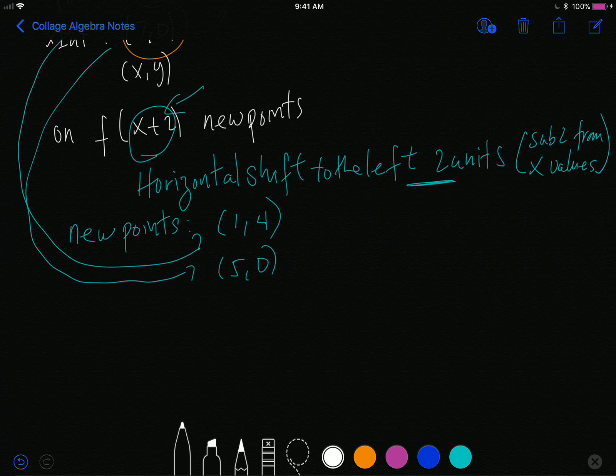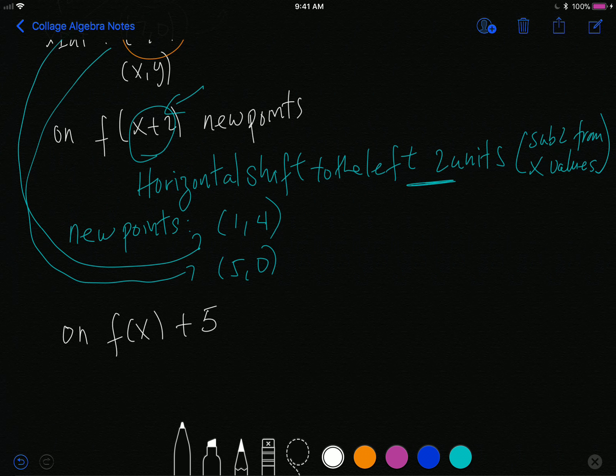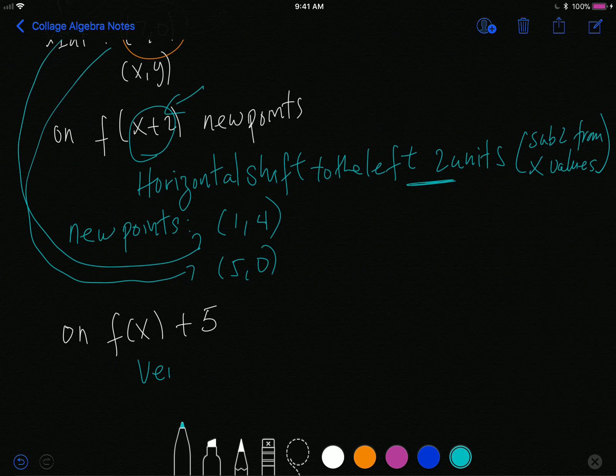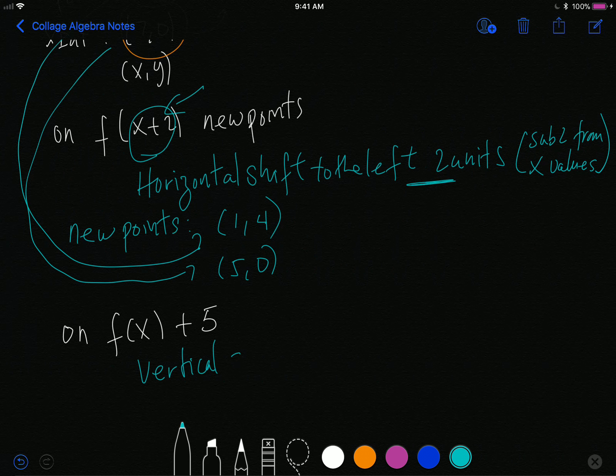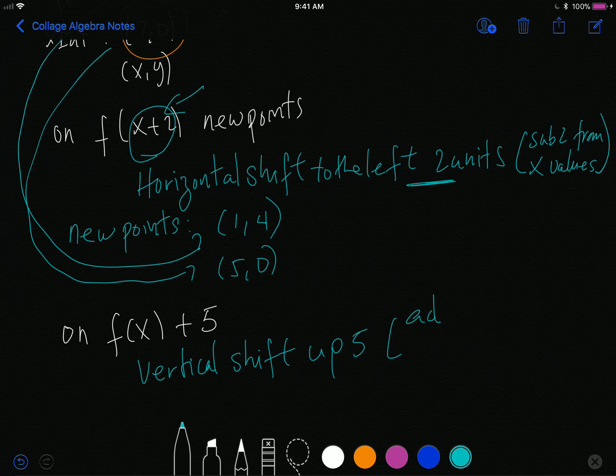Another example. So now let's say we have our transformation f(x)+5. This +5 on the outside right here is a vertical shift, and I'm going to go up 5. And what that means is to add 5 to the y values.